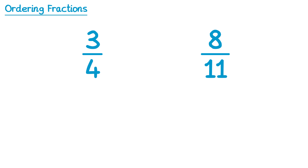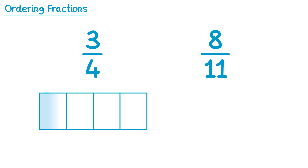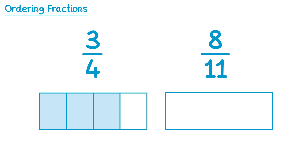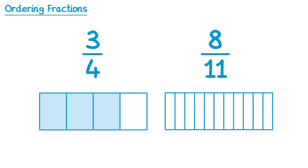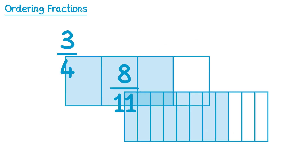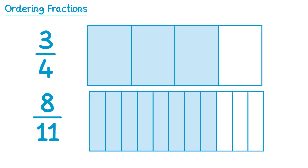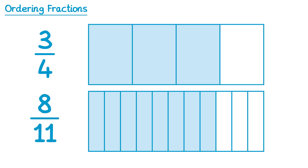Well, if we draw diagrams this time, for 3 quarters we take a bar, split it into 4 equal sections and shade in 3 of them. For 8 elevenths, we take a bar, split it into 11 equal sections and shade 8 of them. This time it's not immediately obvious which one's bigger — they actually look fairly close. But if we line up the bars next to each other, you can see that 3 quarters has slightly more shaded than 8 elevenths. So 3 quarters must be the bigger fraction.